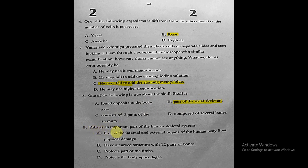Question nine: ribs are an important part of the human skeletal system. The correct statement about ribs is that they have a curved structure with 12 pairs of bones. They protect internal organs but do not protect the limbs or the body appendix. The correct answer is: have a curved structure with 12 pairs of bones.